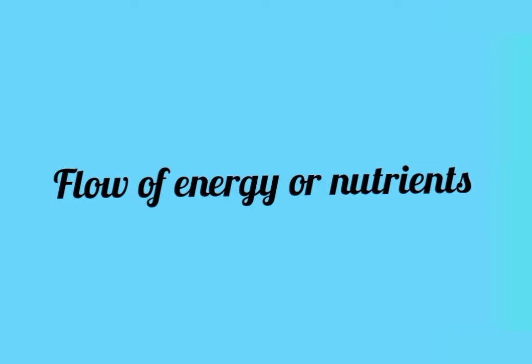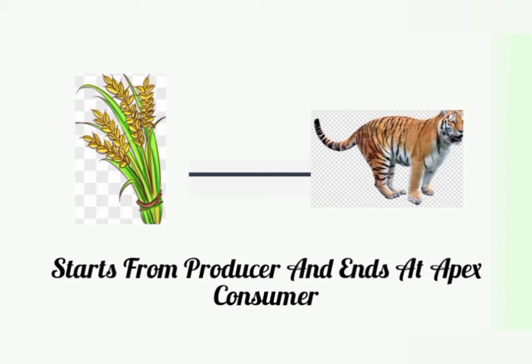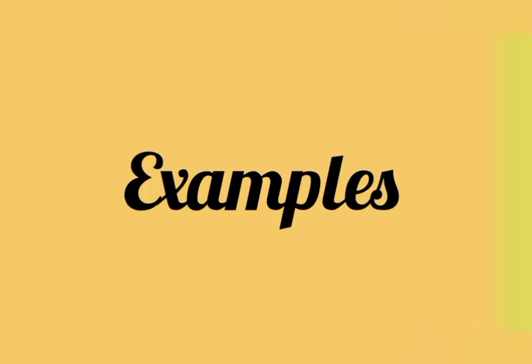Today we'll talk about food chains. A food chain is a flow of energy or nutrients. A food chain is linear — it starts from producers and ends at the apex consumer.